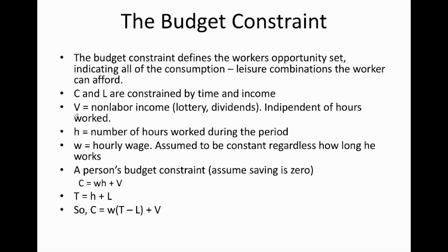We want to establish a few important notations before we go to the budget constraint. First, we have the notation capital V to denote non-labor income, where non-labor income refers to income available to the workers other than the direct work he or she is currently undertaking. This can include winning a lottery, income from investment such as dividends, rental income, or inheritance. This type of income, what we call non-labor income, is independent of hours worked.